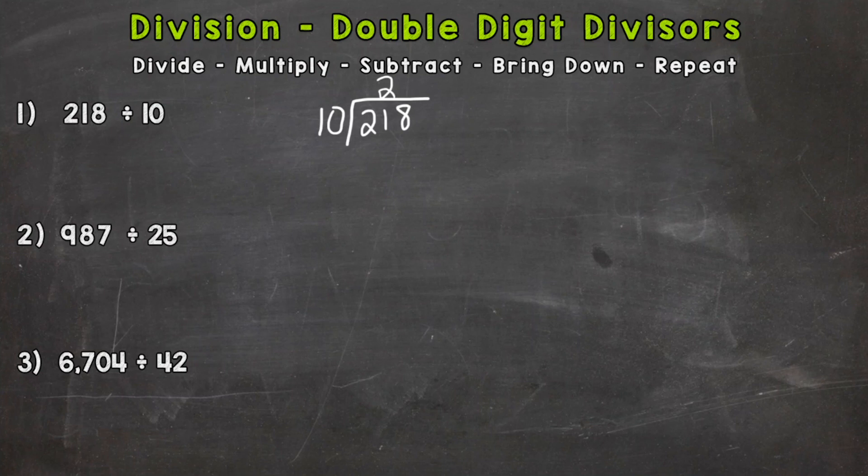Now we multiply, so we come back around. 2 times 10 is 20. After we multiply we subtract: 21 minus 20 is 1. Now we bring down our next number, which is that 8, and we now have to repeat, so we go back over to divide.